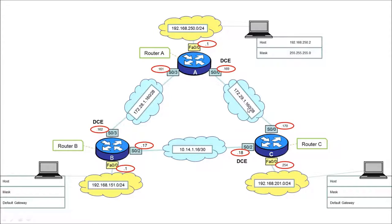The subnet between router A and router C is 172.29.1.160/28. With slash 28, everything up to and including .160 is the subnet, so .169 and .170 are hosts on that subnet. On router A serial 0/3, going between A and B, we have 172.28.1.160/28 — which is 255.255.255.240. Note that subtly changed to 172.28 as opposed to 172.29. Slash 28 takes us to and including .160, so .161 is the first usable address and .162 the last before broadcast — two different subnets, two different IP addresses.